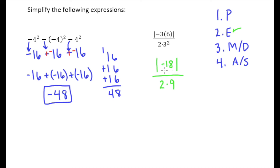Now on top, we need to take the absolute value of negative 18, which gives us 18. And then two times nine is 18. And then finally, we know 18 divided by itself is just going to give us one. And so that's our answer to this problem.